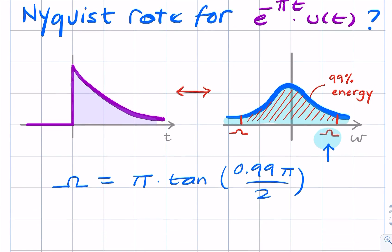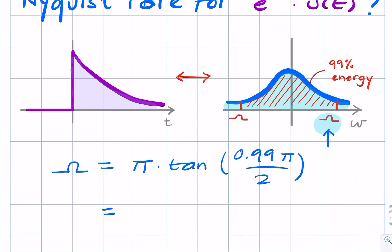And we can easily calculate that. Remember, your calculator has to be in radians. Otherwise, the answers will be meaningless. So, if I put that into the calculator, I get a value that's almost 200 radians per second.